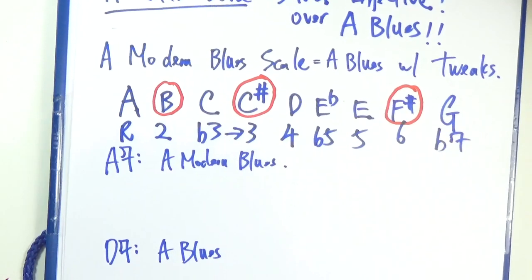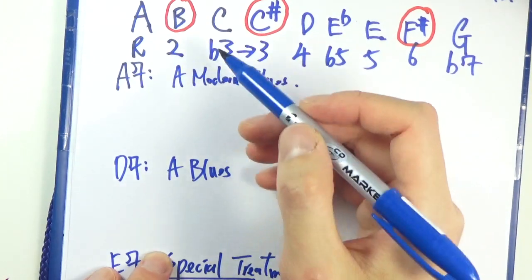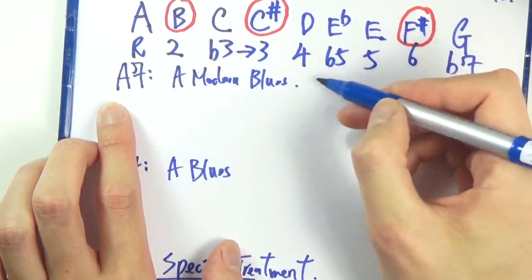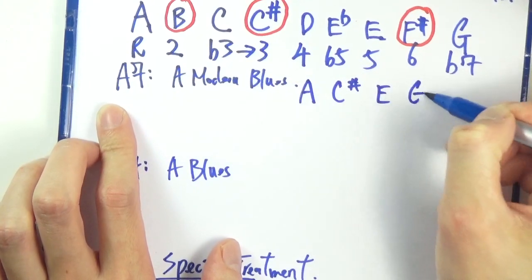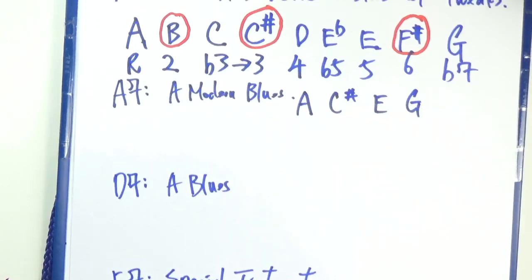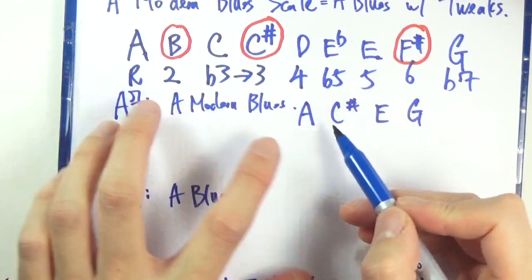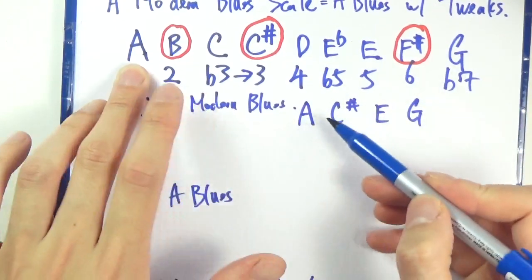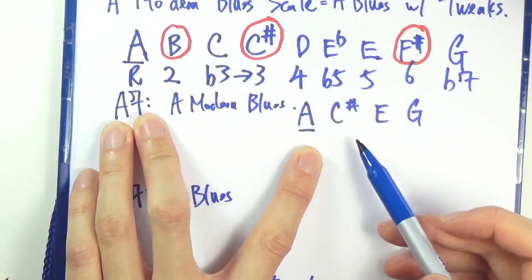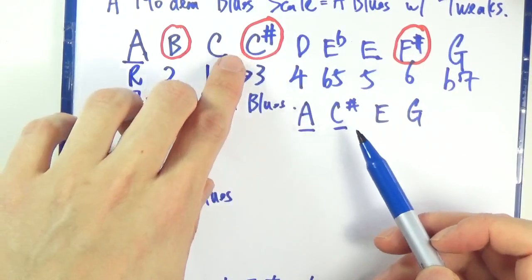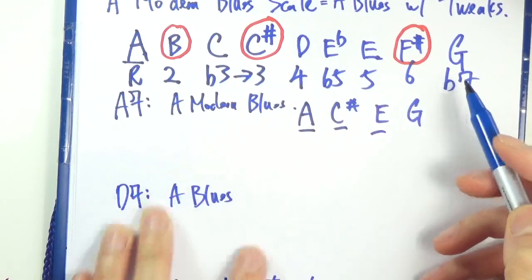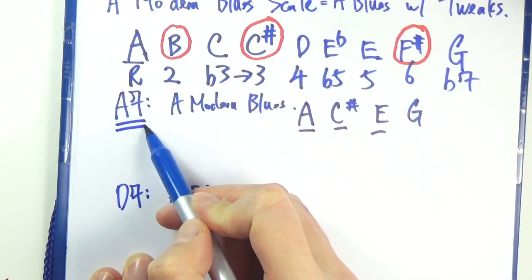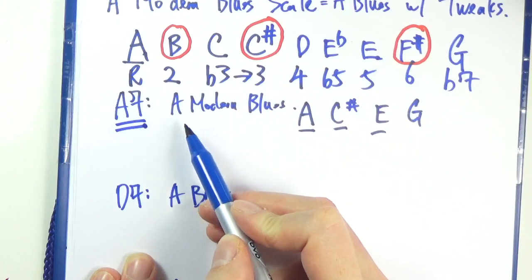The implication of that is this. On the A dominant 7 chord, let's write down the chord tones one more time. A, C sharp, E and G. So check it out. This time we should have all the chord tones. A, we got it here. C sharp. Do we have C sharp? Yes. E, we have E. We also have G. So over the A7 chord, the 1 chord, the A blues scale would fit in perfectly.